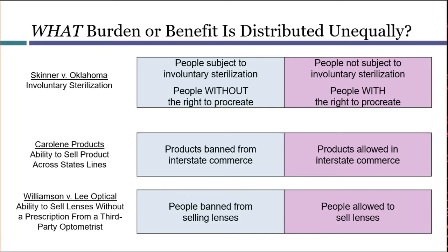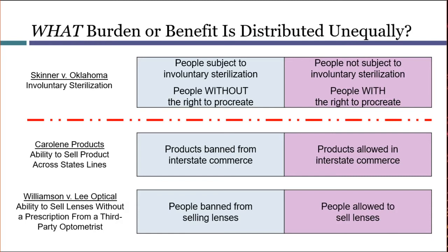Of these three cases, only Skinner found that the inequality was unconstitutional. This is because the unequally distributed right — the right to procreate — was considered fundamental. Meanwhile, the right to sell specific products or use a specific business model is not a fundamental right. When we get to item B in the Kickstarter, that distinction will affect the level of scrutiny. But for right now, the skill to work on is just identifying what is being distributed unequally.